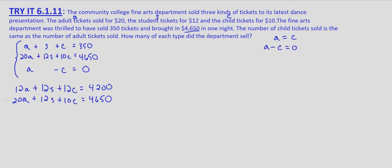Now I'm going to subtract the second equation from the first. Changing all signs on the second equation: 12A minus 20A is negative 8A; 12S minus 12S is 0; 12C minus 10C is 2C; and 4,200 minus 4,650 is negative 450. So now we have an equation with just A and C: negative 8A plus 2C equals negative 450.